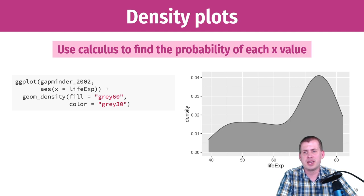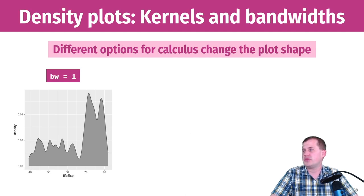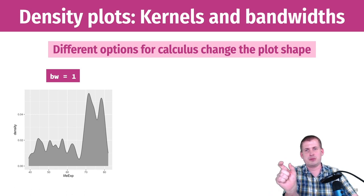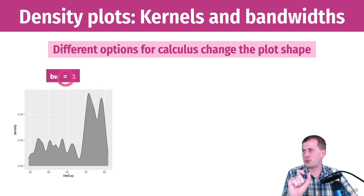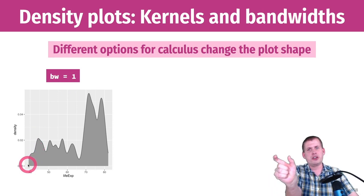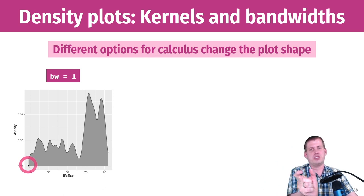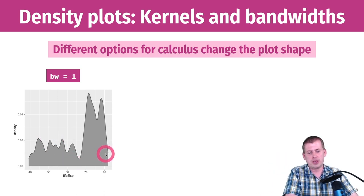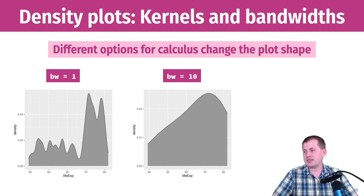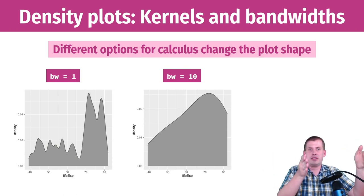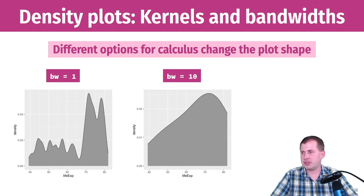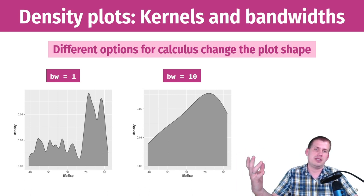You can change options with density plots. The bandwidth controls how R figures out how curvy the lines should be, using a moving window. A bandwidth of 1 looks at each individual year and produces a really bumpy curve — too narrow. A bandwidth of 10 uses a very large window and produces a giant blob that doesn't represent the data well. The default bandwidth uses the nrd0 algorithm that R uses to figure out the ideal bandwidth automatically.